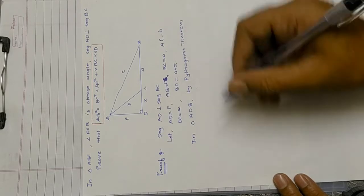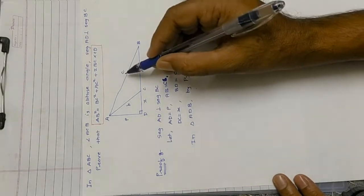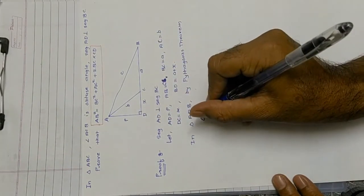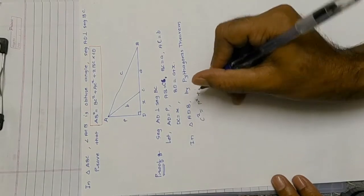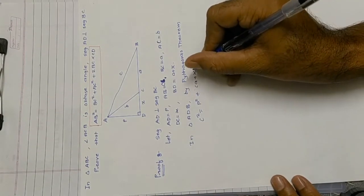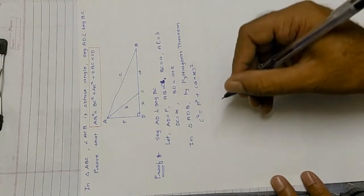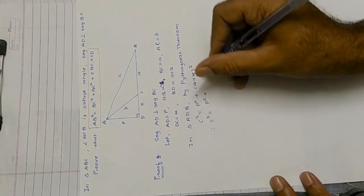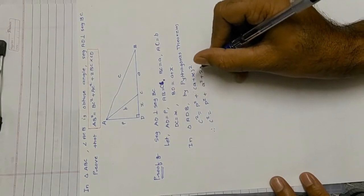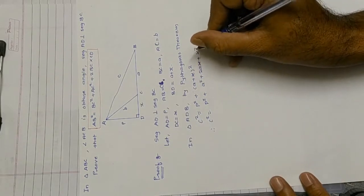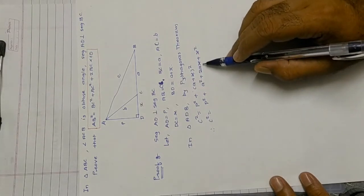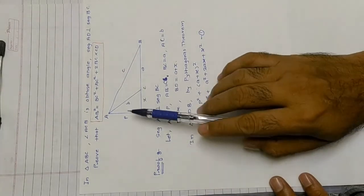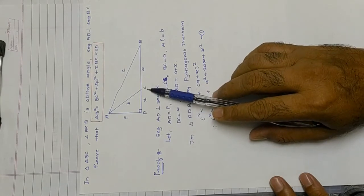In triangle ADB, it is a right angle triangle, so apply Pythagoras theorem with AB as hypotenuse: c² = p² + (a + x)². Expanding: c² = p² + a² + 2ax + x². This is equation number one.